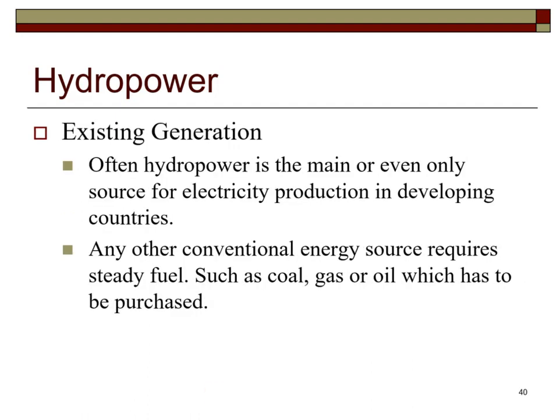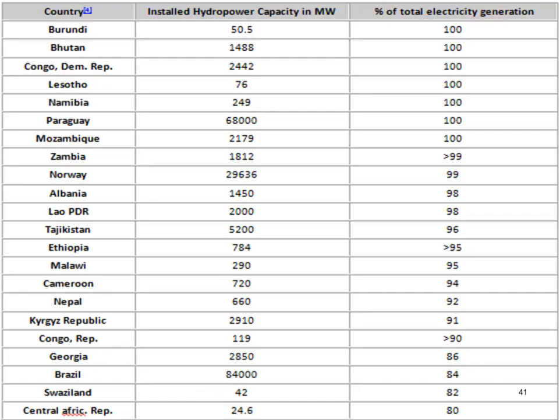Some countries depend solely on hydroelectricity production. Often hydropower is the main or only source of electricity in developing countries, as other conventional energy sources require steady fuel purchases such as coal, gas, or oil. A list of countries that depend wholly or almost wholly on hydroelectricity is provided here.